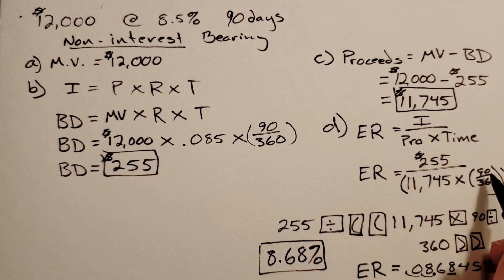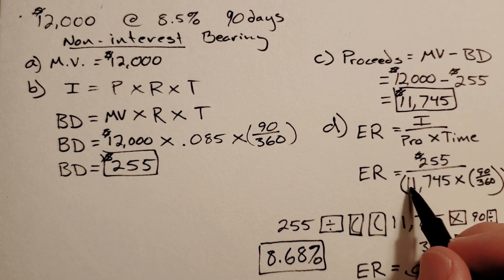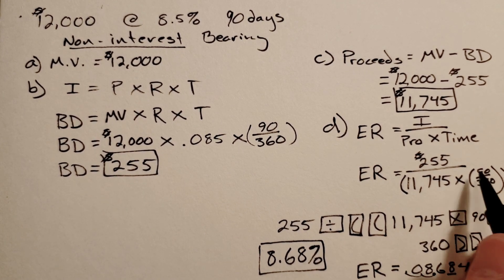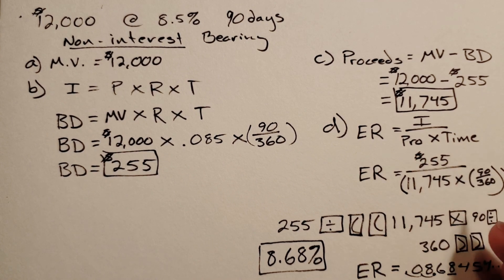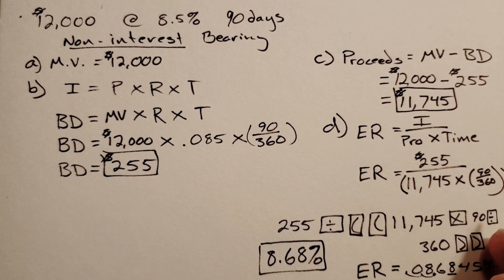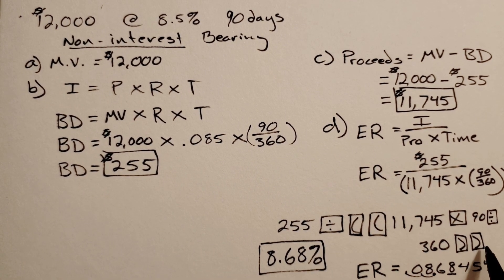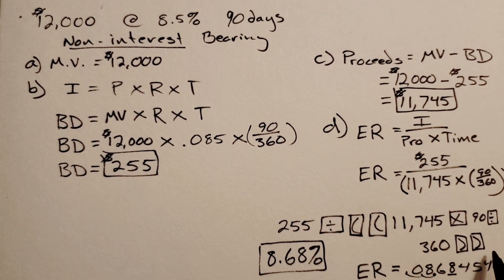If you don't have the parentheses buttons on your calculator, here's my recommendation: work your way backwards. Do 90 divided by 360, times that answer by $11,745 and hit equals, then do 255 divided by that answer. It's not ideal - it'd be better if you did it the first way and typed it all in at once so you don't have to worry about rounding errors. But if your calculator doesn't have parentheses, that's what you'd want to do.